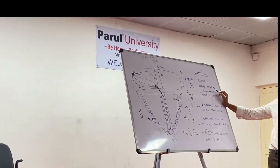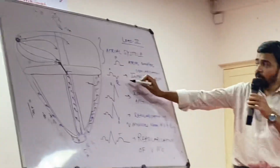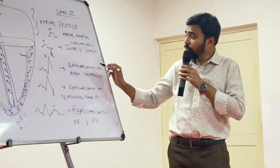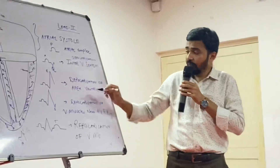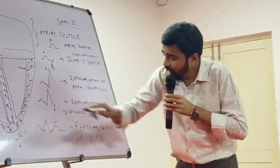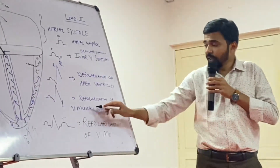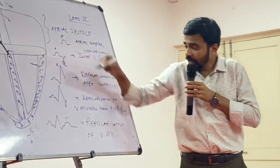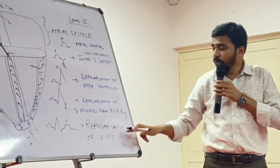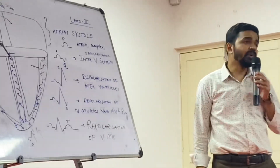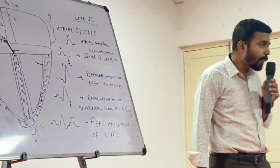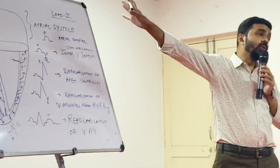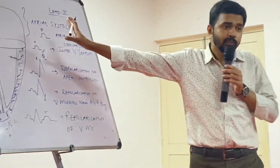So in summary: P wave is due to atrial systole, Q wave is due to depolarization of the interventricular septum, R wave is due to depolarization of the apex of the ventricle, S wave is due to depolarization of ventricular muscles near the atrioventricular fibrous ring, and T wave is due to repolarization of ventricular muscles.